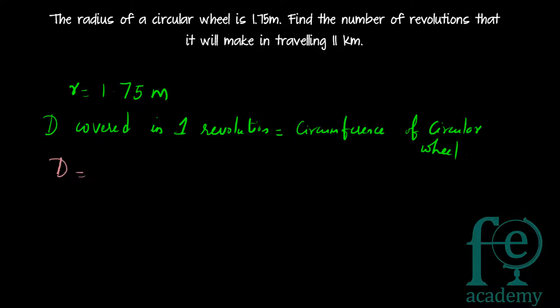The distance covered in one revolution is equal to the circumference, which is 2πr. So 2 × (22/7) × 1.75, using π = 22/7, gives you 11 meters. So 11 meters is covered in one revolution.